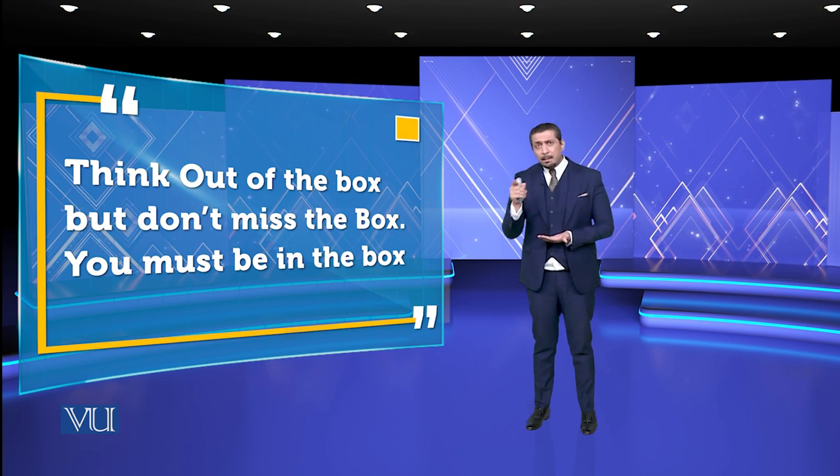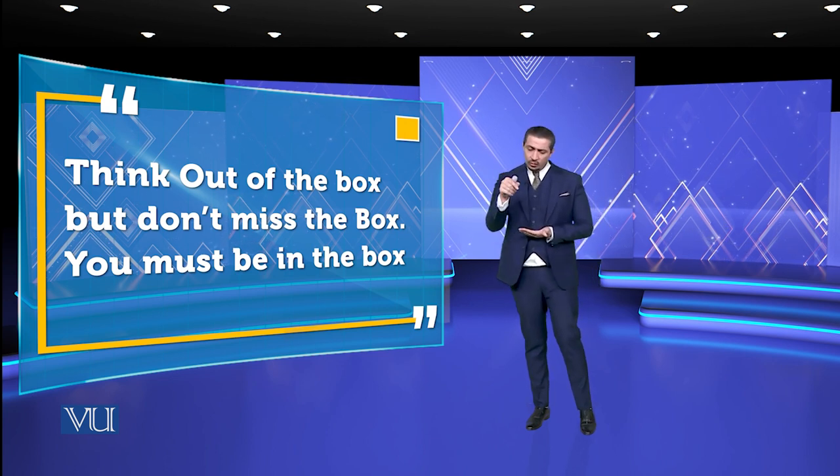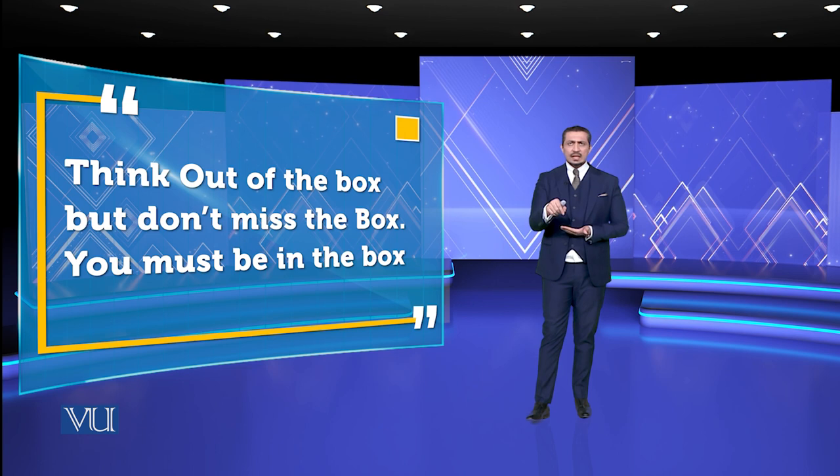Think out of the box, but don't miss the box — you must be in the box. جب آپ نے trillions میں outcome دکھانا ہے — for example, Elon Musk کی تمام 8 companies مل کر $13.2 trillion پر کھڑی ہیں، اور Jeff Bezos کا $7-something trillion پر جا رہا ہے — وہ دونوں competitors بن گئے۔ لیکن ان سے پہلے بھی بہت لوگ گزرے ہیں جن کا نام شاید آپ کو نہ پتا ہو۔